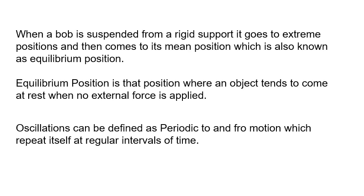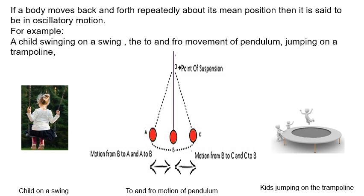Oscillations can be defined as a periodic to and fro motion which repeats itself at regular intervals of time. If a body moves back and forth repeatedly about its mean position, then it is said to be in oscillatory motion.